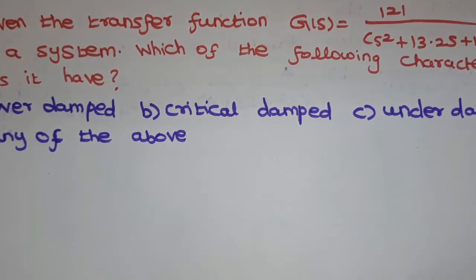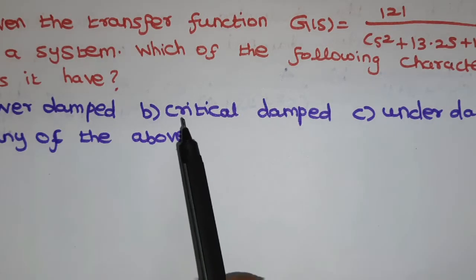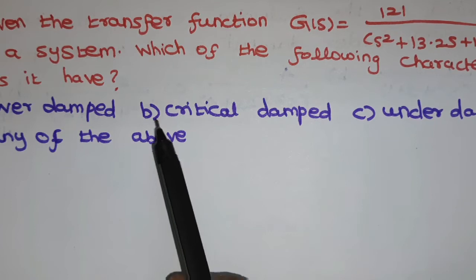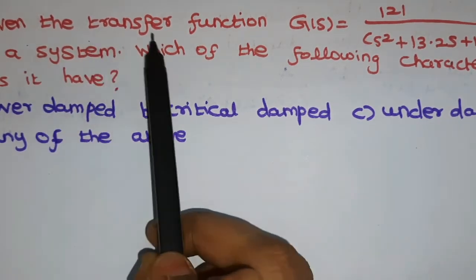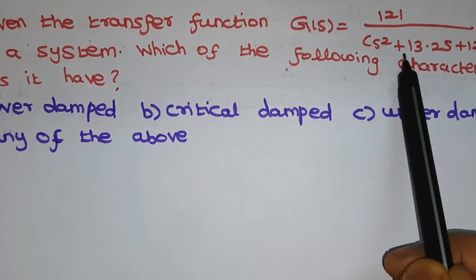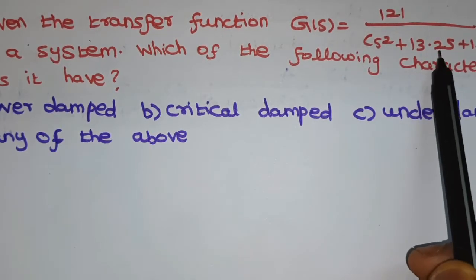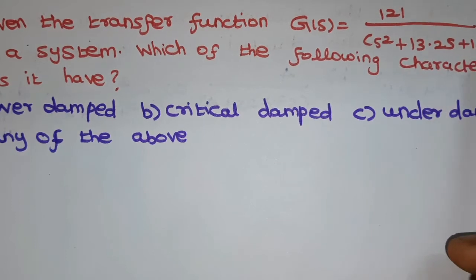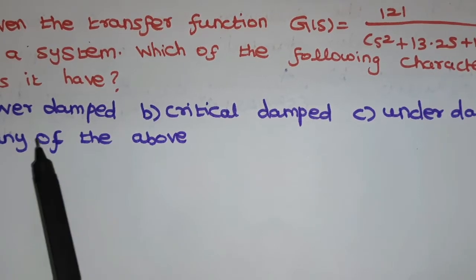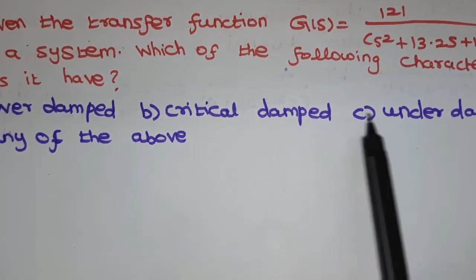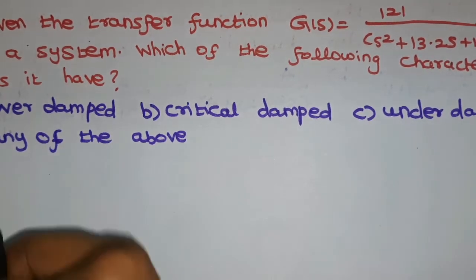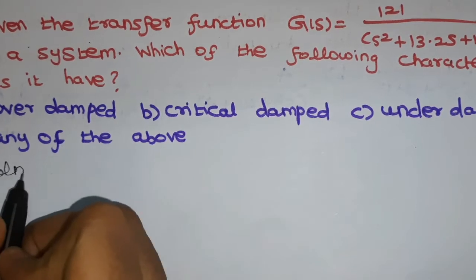Hello everyone, welcome to Off Campus. Today we are going to see some important problems in control systems. The problem given: the transfer function G(s) is equal to 121 divided by s squared plus 13.2s plus 121. Which of the following characteristics does the system have? Option A: over-damped, Option B: critically damped, Option C: under-damped, Option D: any of them.